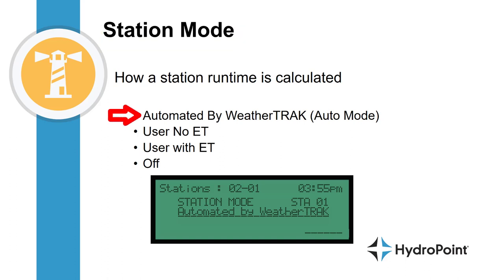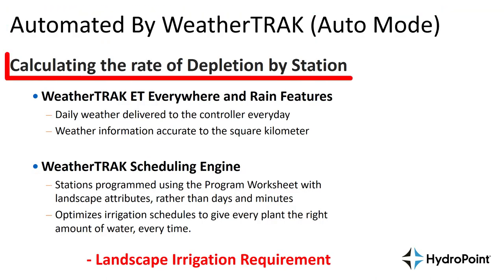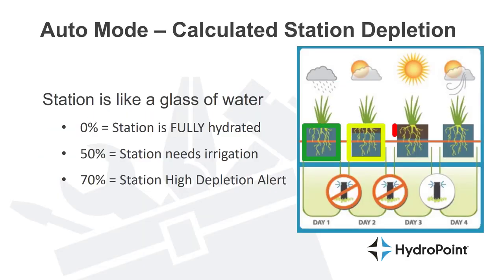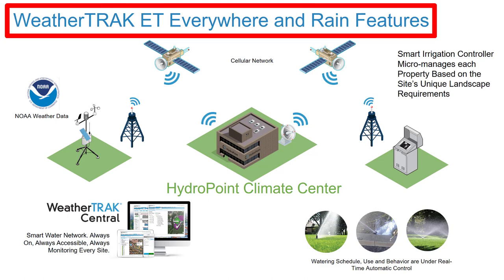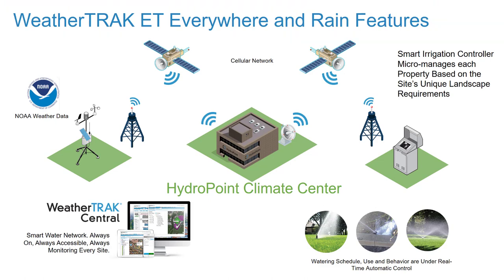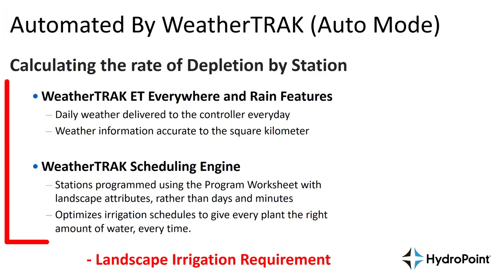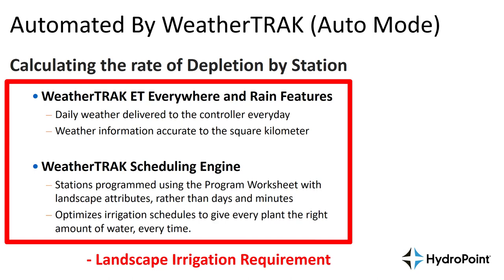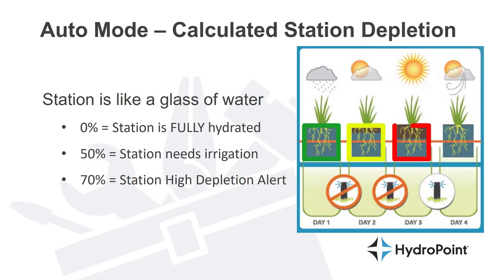Typically your stations will be programmed and automated by WeatherTrack, or auto mode. When a station is in auto mode, an irrigation schedule will be created by calculating the rate of depletion by station — calculating how much water is in the soil and then the necessary irrigation to keep your plants healthy. This type of schedule requires real-time weather information, which WeatherTrack gets from the HydroPoint Climate Center, providing WeatherTrack ET everywhere and rain features to keep up with changing weather conditions, as well as detailed station scheduling. The automated by WeatherTrack schedule considers all of those elements and creates an irrigation schedule that fills the landscape irrigation requirement, delivering exactly the amount of water it takes to maintain a healthy landscape.